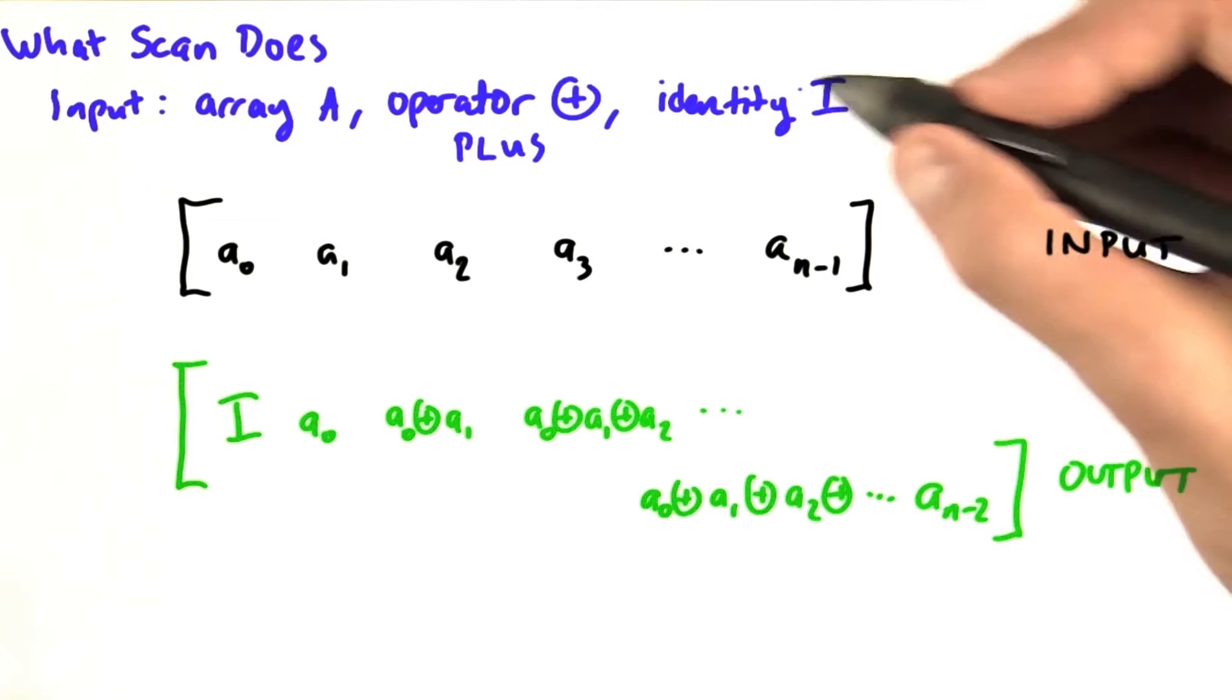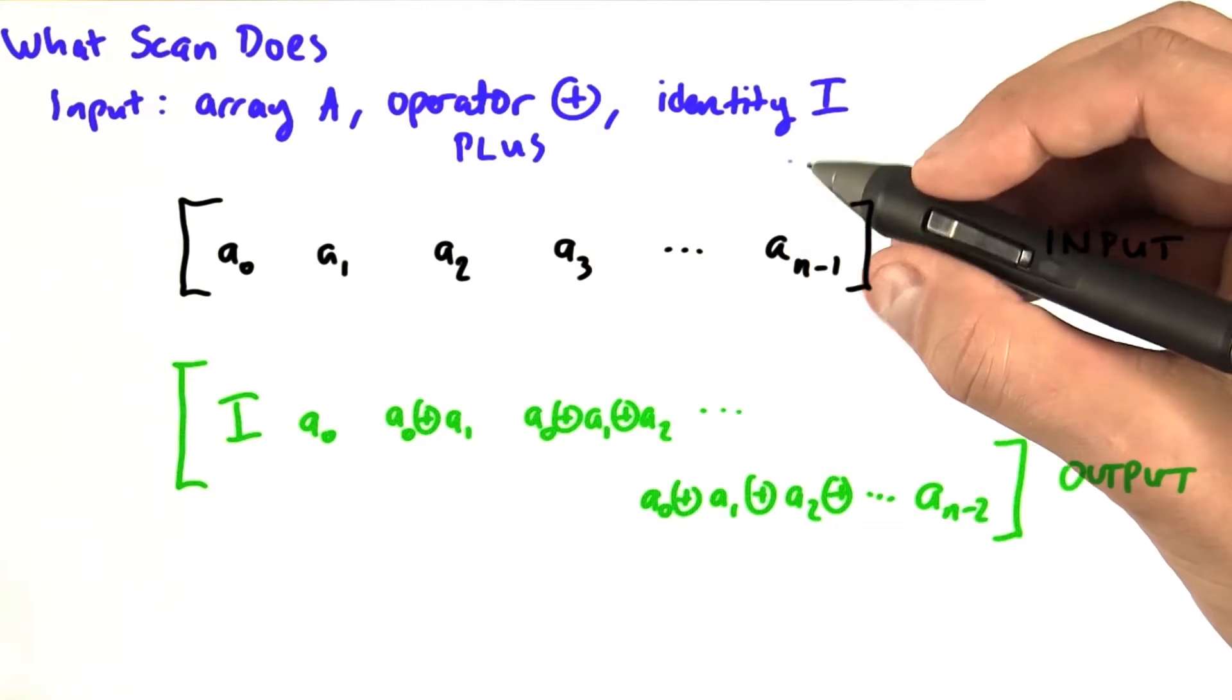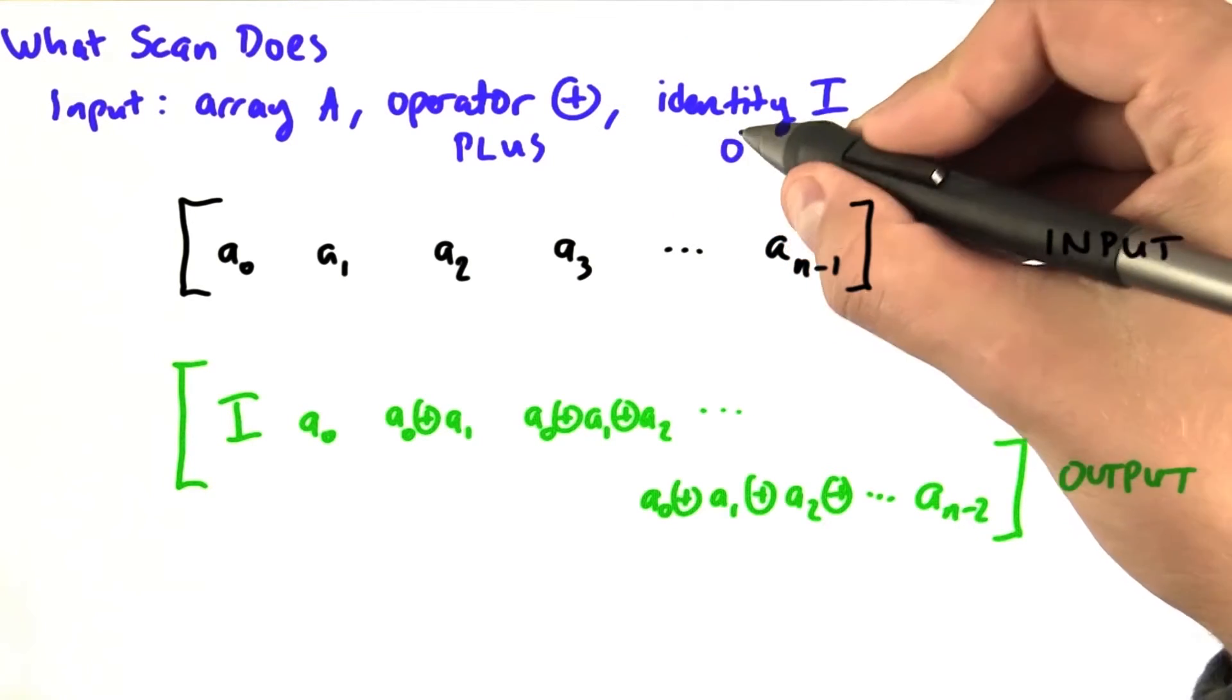And finally, we have an identity element that's associated with this particular operator. So in this case, the identity element is 0.